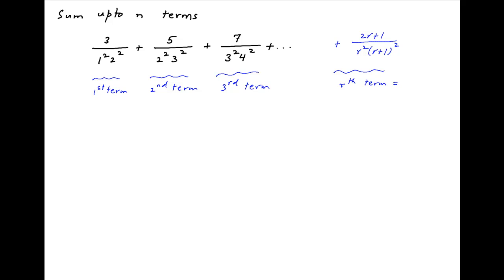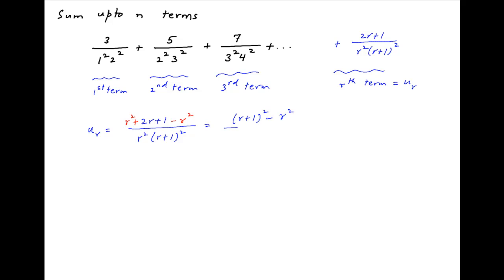Let's denote the rth term by ur. So ur is equal to (2r + 1) divided by r² times (r+1)². Now add and subtract r² in the numerator. The first three terms in the numerator are equal to (r+1)². Therefore ur is equal to (r+1)² minus r² divided by r² times (r+1)².